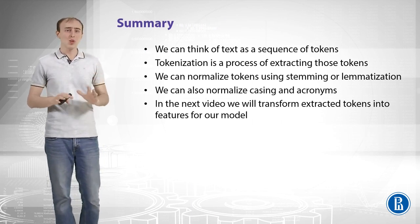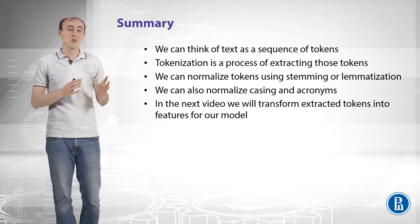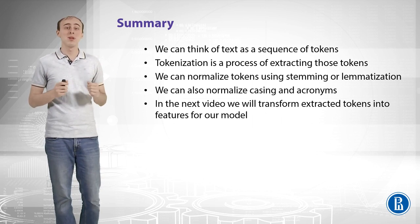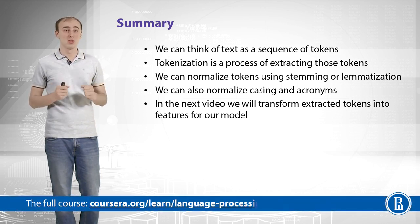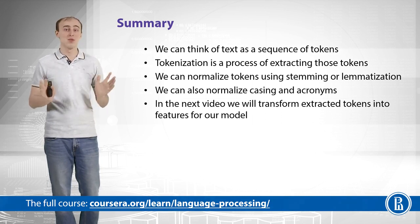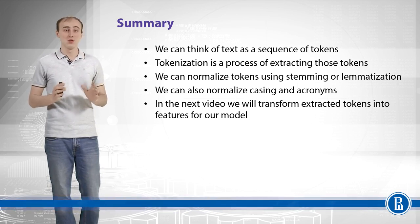Let's summarize: we can think of text as a sequence of tokens, and tokenization is the process of extracting those tokens — meaningful chunks of text such as words, sentences, or something bigger. We can normalize tokens using stemming or lemmatization, and you have to try both to decide which works best. We can also normalize casing and acronyms among other things. In the next video we will transform extracted tokens into features for our model.